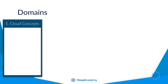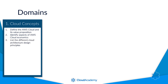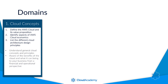Domain one: cloud concepts. This domain focuses on three key areas — define the AWS cloud and its value proposition, identify aspects of AWS cloud economics, and list the different cloud architecture design principles. This will test your knowledge of general cloud concepts and principles, looking at the benefits of the cloud and what it can bring to your business from both a financial and operational perspective.